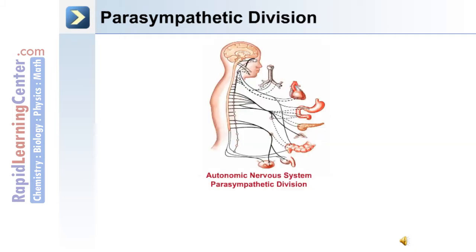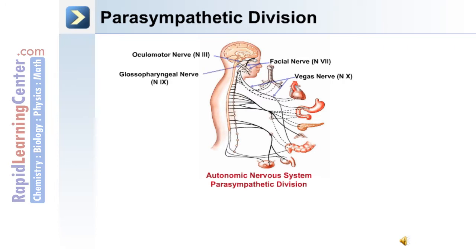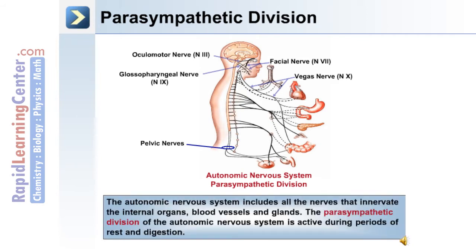The parasympathetic division has the following cranial nerves associated with it: the oculomotor nerve, the facial nerve, the vagus nerve, the glossopharyngeal nerve, and the pelvic nerves. The autonomic nervous system includes all the nerves that innervate internal organs, blood vessels, and glands. The parasympathetic division is active during periods of rest and digestion.